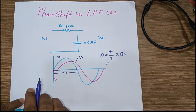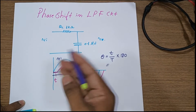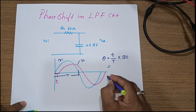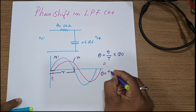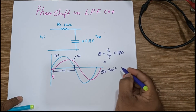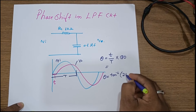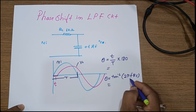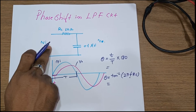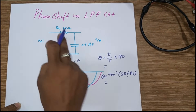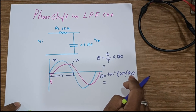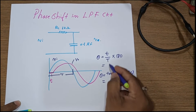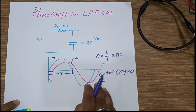Whatever phase you get, this is the phase shift by the output waveform with respect to the input. Similarly, the calculated formula is: theta equals tan inverse of 2πfRC. Here you substitute the value of frequency at which you are giving the input, the value of R, and the value of C. These two values — observed and calculated — should be similar to each other.